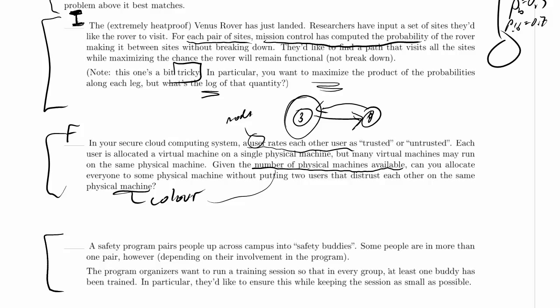First of all, it's not clear to me whether every group means every pair that are paired up in the safety buddies or every subset of the original set. We've got to decide the right interpretation for that. The only reasonable interpretations are either every pair of safety buddies or every subset of the original set.